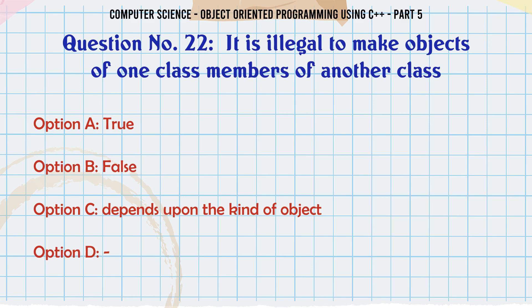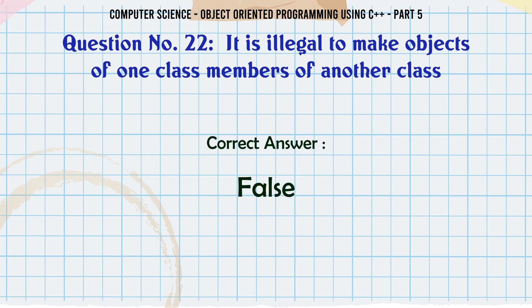It is illegal to make objects of one class members of another class. A. True. B. False. C. Depends upon the kind of object. D. The correct answer is: False.